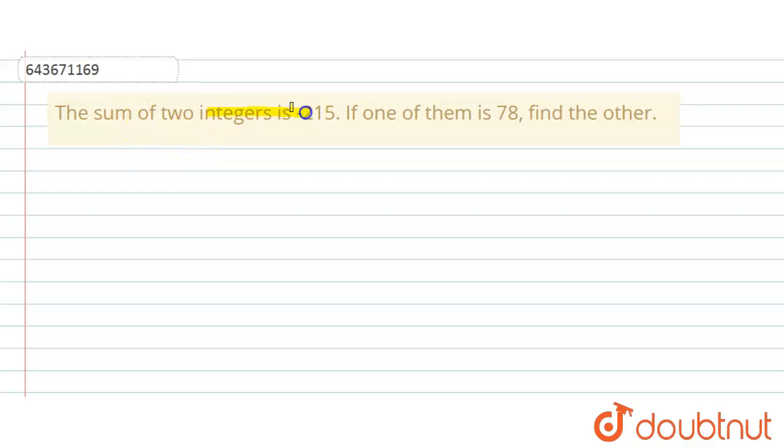Hello everyone, the question says that the sum of two integers is minus 215. If one of them is 78, find the other.